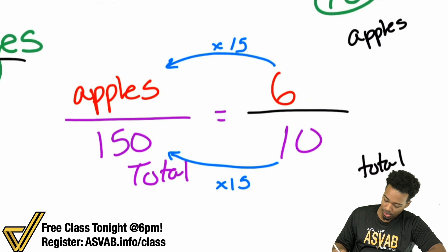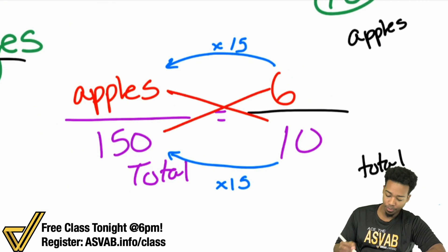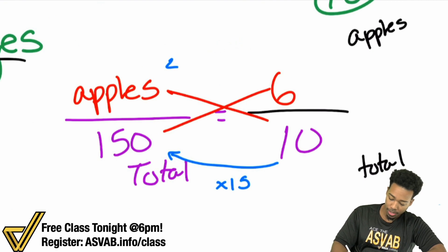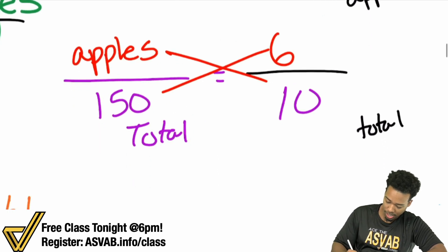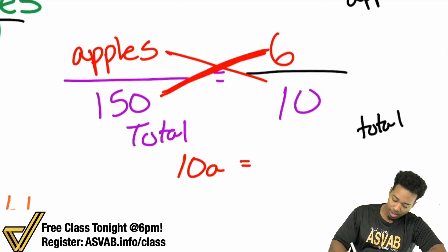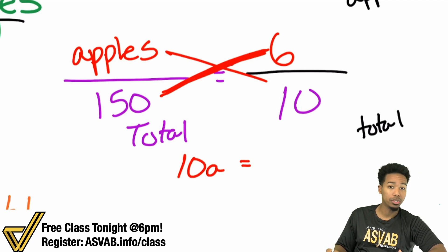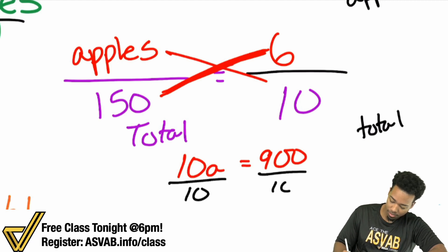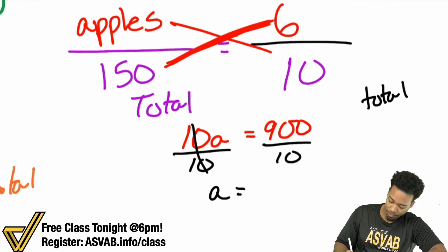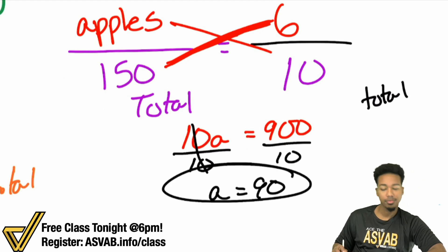The other way to do this is cross-multiplication and division. We're going to have 10 times A, and then 150 times 6, which gives us 900. So we have 10A equals 900. Divide both sides by 10, and we have A equals 90. Right there.